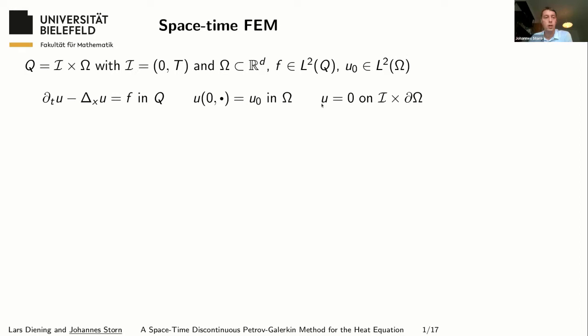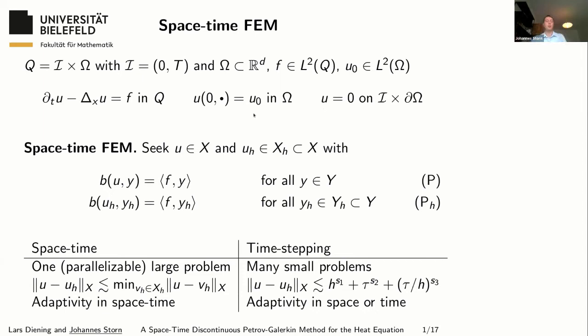Now we want to approximate the solution, and we do not apply a classical time-marching scheme. We apply a so-called space-time finite element method, which is a rather new approach. We characterize the solution u as a unique function in some space X that solves a variational problem for all functions in some test space Y. We can then replace the infinite-dimensional spaces X and Y by finite-dimensional subspaces X_h and Y_h, which leads to a finite-dimensional problem that is hopefully well posed.